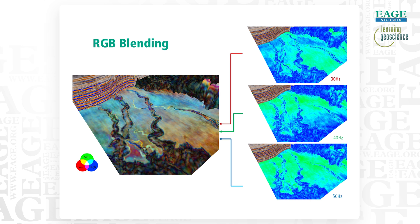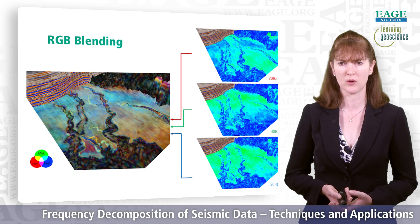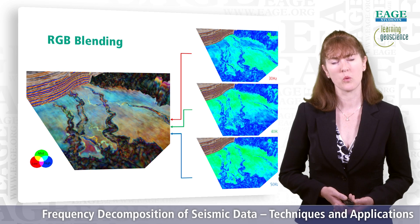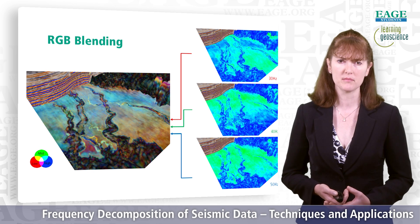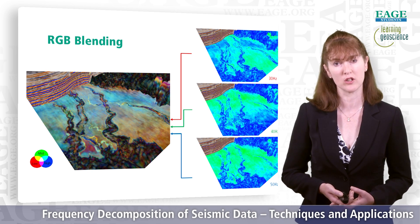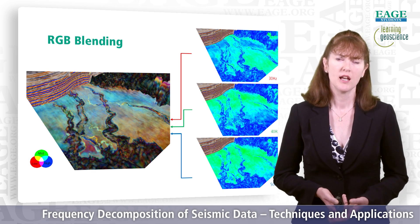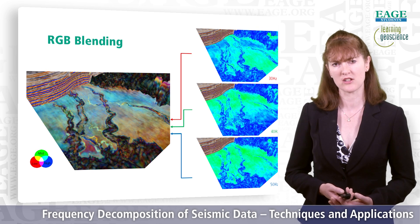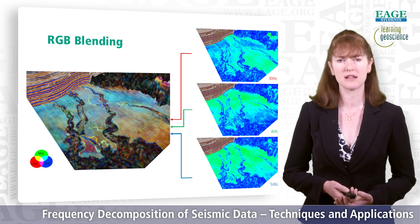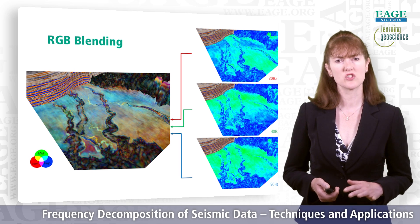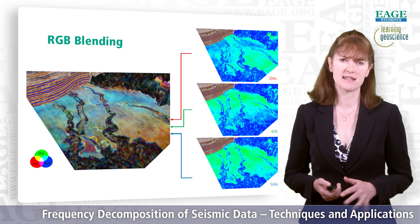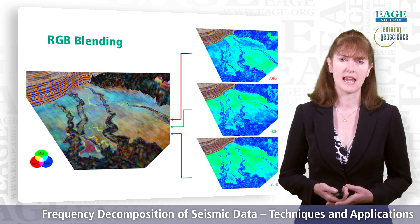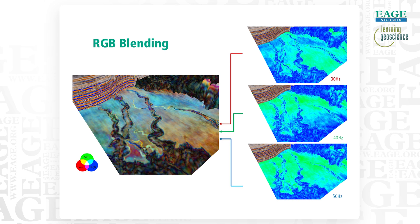The 30 Hz response goes into the red channel, the 40 Hz response into the green channel, and the 50 Hz response into the blue channel. When we do this, we get a blend showing contribution from all three volumes. Where we have white, there's a strong high-amplitude response in all three volumes; where we have black, a low-amplitude response in all three. Where one color is dominating, that frequency is dominating. The geometries of the three channels and the fourth cross-cutting channel come out really nicely, as well as the internal heterogeneities. The background color trend changes from blue in the north to a more brownish-red toward the south, indicating a greater contribution from lower frequencies — possibly indicating thickening of sequences going southward.